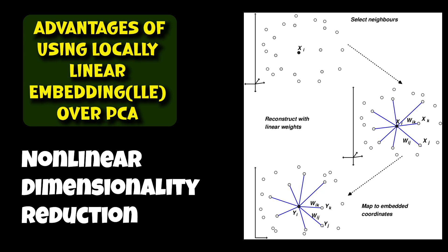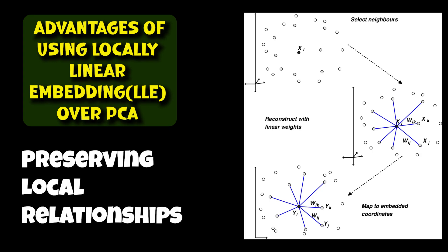In cases where the data resides on a non-linear manifold, LLE can provide a more accurate representation of the data's intrinsic structure. For example, consider a dataset containing points from a Swiss roll, which is a spiral-shaped manifold dataset. LLE can unroll the Swiss roll and reveal the underlying two-dimensional structure, while PCA would fail to capture the spiral shape and instead focus on the direction of maximum variance.